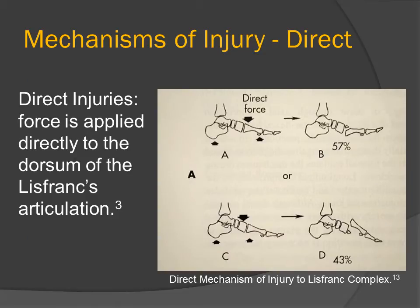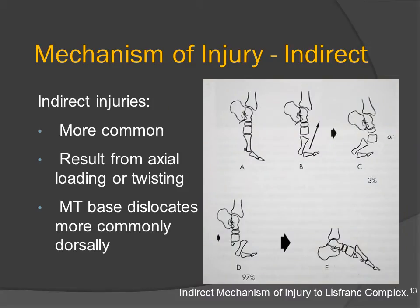The mechanism of injury can be either direct or indirect. Direct injuries are when force is applied directly to the dorsum of the Lisfranc joint complex. Indirect injuries are more common and result in subluxation of the second metatarsal base on the intermediate cuneiform, and most commonly they dislocate dorsally, which can be seen in soccer when a player gets kicked right underneath the foot.